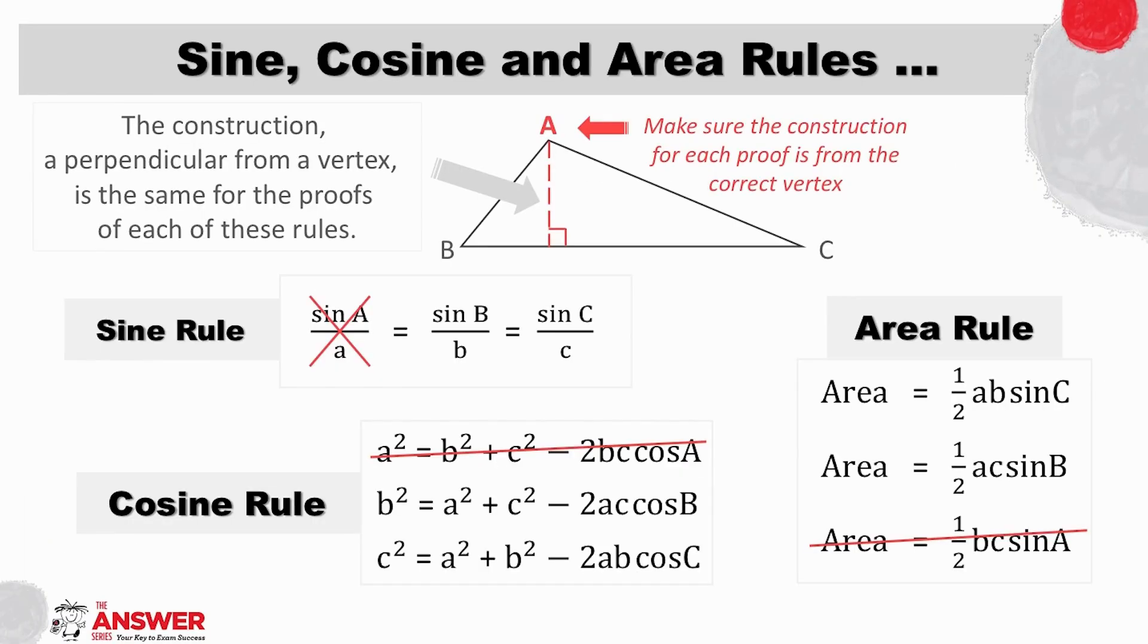Let's take a moment here to focus on the construction for the proofs of these rules. What might be helpful to know is that the construction for each of the proofs is a perpendicular from a vertex. And to start correctly with this construction is key. So what this means is to make sure the vertex you construct from doesn't appear in what you are needing to prove.